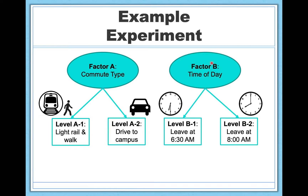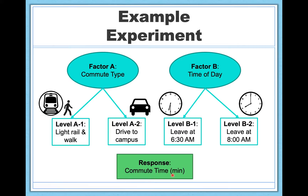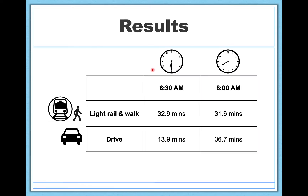My response variable here is commute time in minutes — how long it takes me to get to campus. Here are the results from data I actually collected. Taking the light rail and walking at 6:30 a.m. takes about 33 minutes; at 8 a.m., about 32 minutes. Driving at 6:30 a.m. is very quick — about 14 minutes. Driving at 8 a.m. is really slow — about 37 minutes.